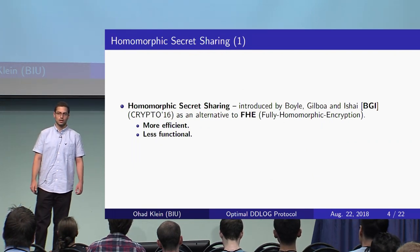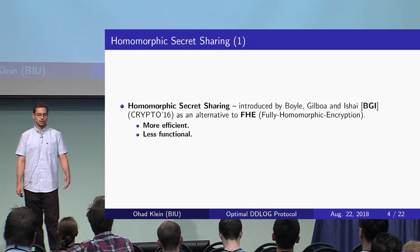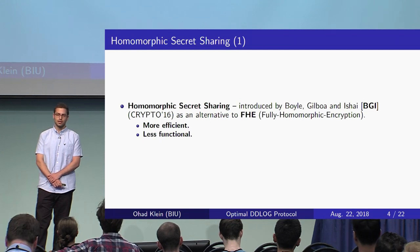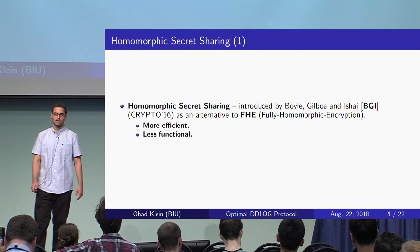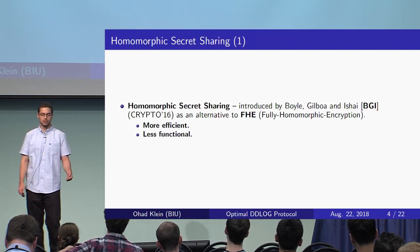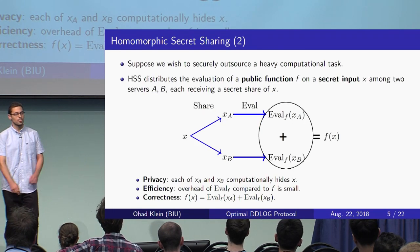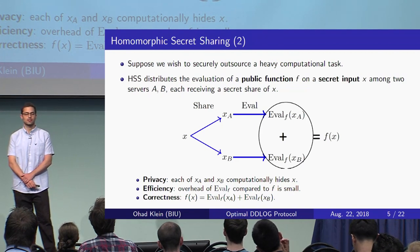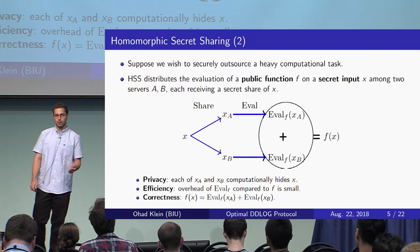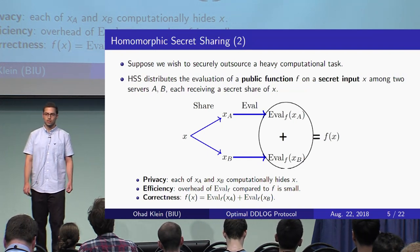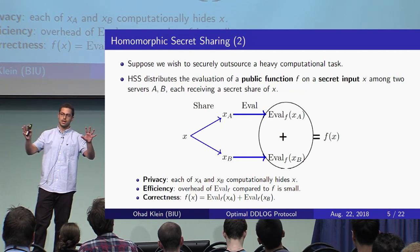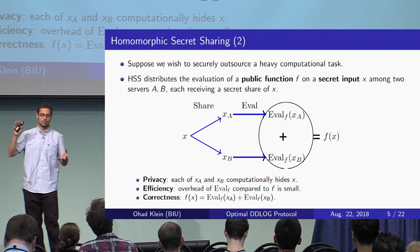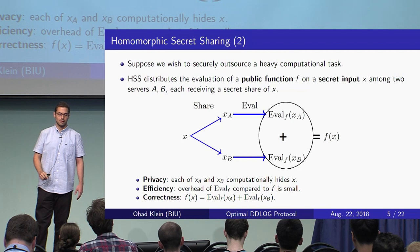Let us now see the original motivation for the spaceships problem: homomorphic secret sharing. This is a concept introduced by Boyle-Gilboa-Nishai, or BGI, two years ago, and it is an alternative to fully homomorphic encryption. At a very high level, the difference between HSS and FHE is that HSS is more efficient, however it is less functional. The first problem HSS solves is securely outsourcing a heavy computational task. Suppose we want to compute some public function F on a secret input X. HSS splits X into two shares and sends each to a different server. Each server then evaluates some function over its share.